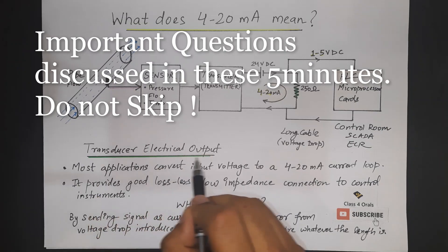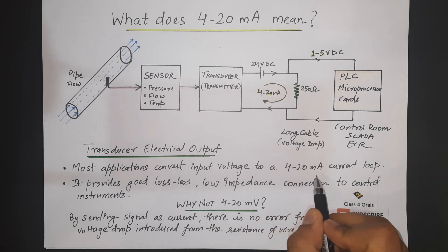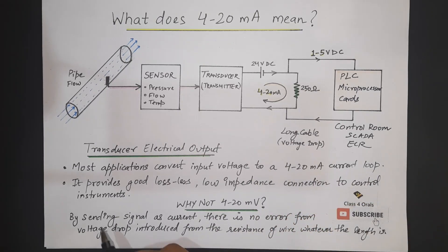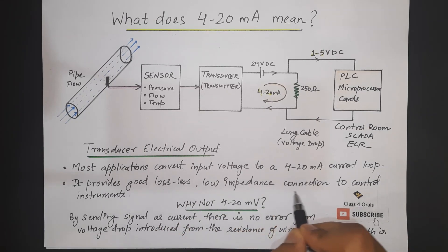The transducer electrical output. Most of the applications convert the input voltage to a 4 to 20 mA current loop. It provides a good lossless low impedance connection to control the instruments.